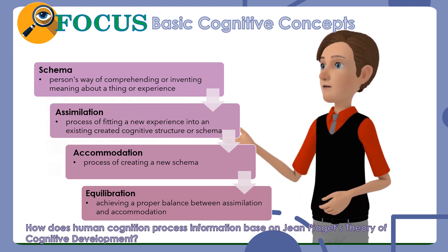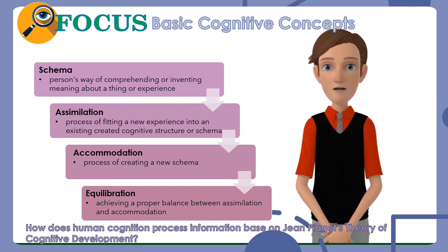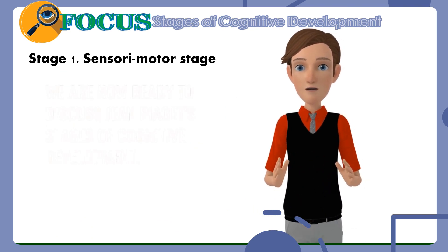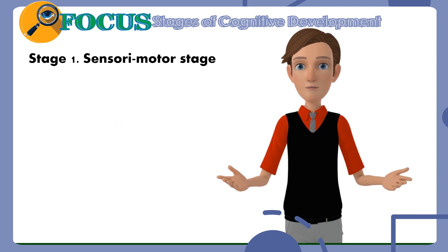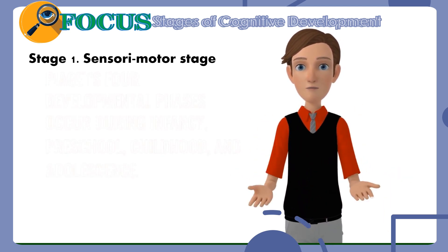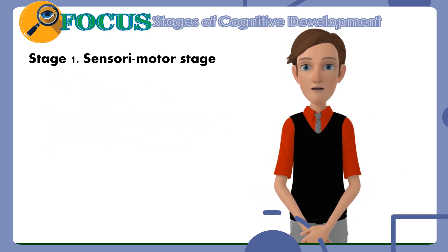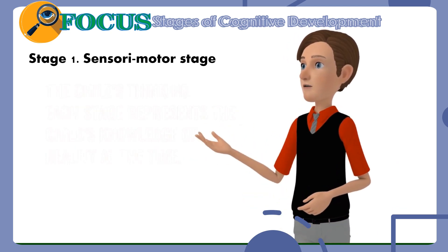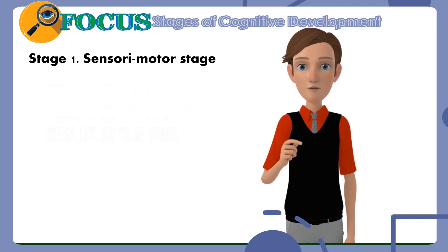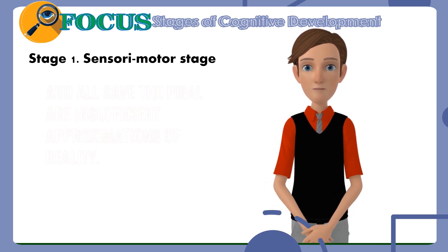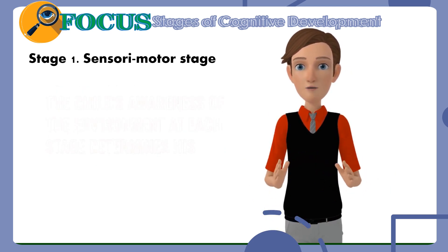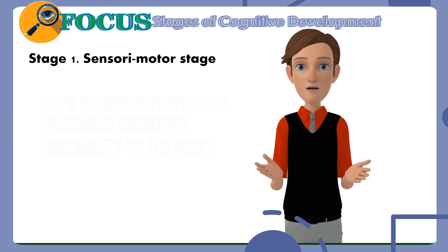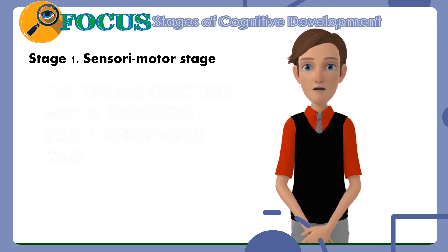Cognitive development involves a continuous effort to adapt to the environment in terms of assimilation and accommodation. In this sense, Piaget's theory is similar in nature to other constructivist perspectives of learning like Bruner and Vygotsky. With knowledge about these basic cognitive concepts, we are now ready to discuss Piaget's stages of cognitive development. His four developmental phases occur during infancy, preschool, childhood, and adolescence. Each stage is distinguished by a broad cognitive framework that influences all aspects of the child's thinking, and the child's awareness of the environment at each stage determines development from one stage to the next.